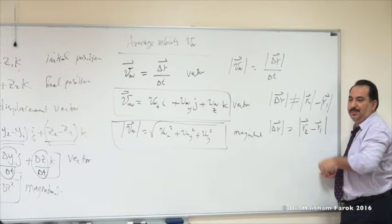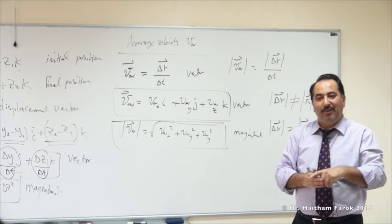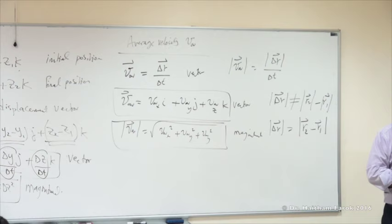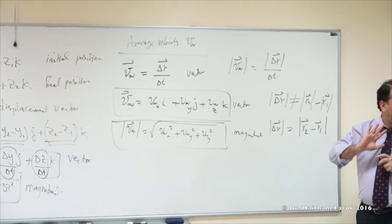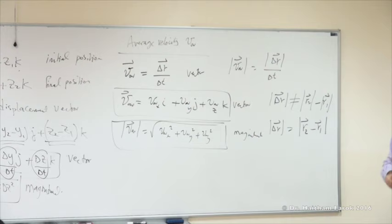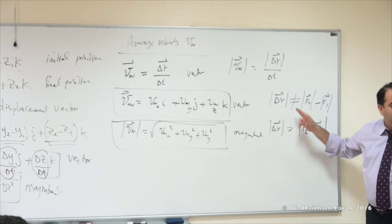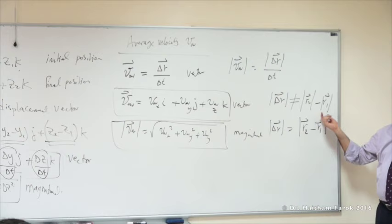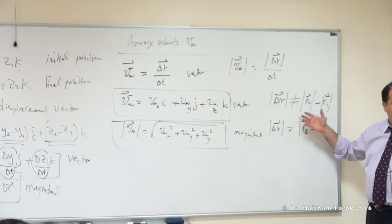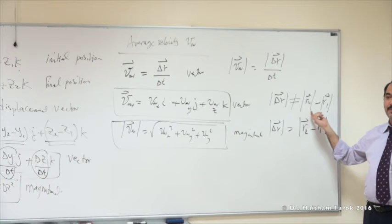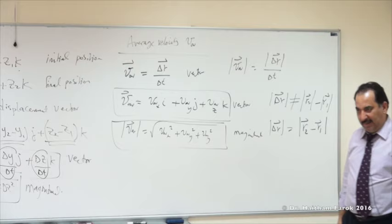Be careful of this mistake - it's a common one. I'll bet that in this class, at least one student will do this mistake in one of the quizzes or exams. The correct approach: you subtract first - R2 vector minus R1 vector - then find the magnitude. You do not take the magnitude of the final minus the magnitude of the initial. The magnitude is always positive, but you must subtract first, then find the magnitude.